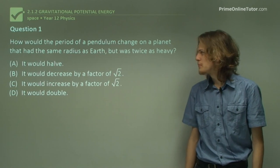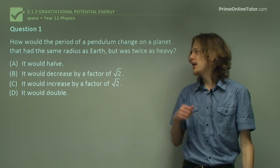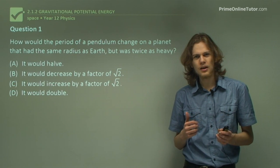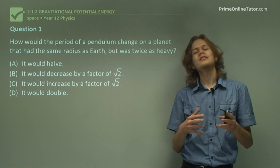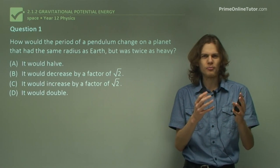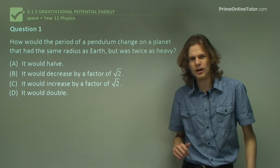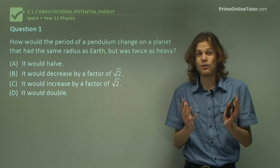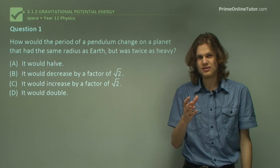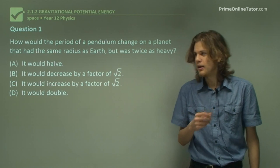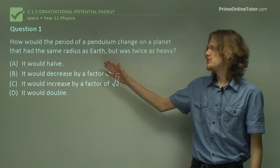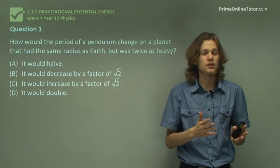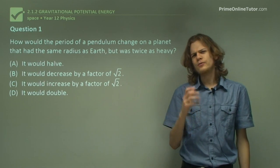Question one. How would the period of a pendulum change on a planet that had the same radius as Earth but was twice as heavy? To get the answer, all we need to find out is how the gravitational acceleration on the planet will change. The gravitational force, and therefore the gravitational acceleration, will be proportional to the mass of the body. That means that if we have the same radius as Earth but we're twice as heavy, the gravitational acceleration is exactly twice as much. So how does that affect the period of a pendulum?